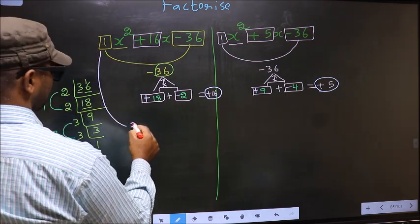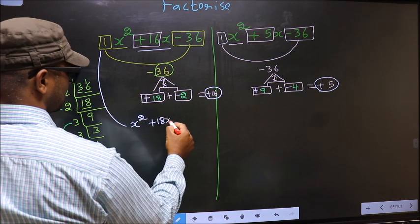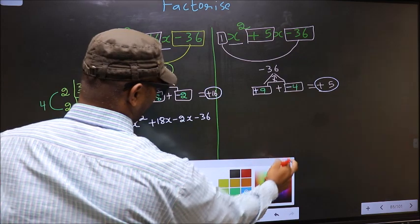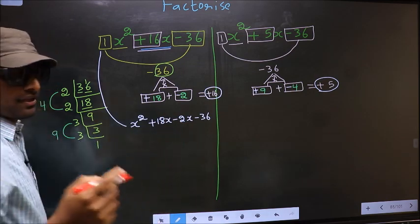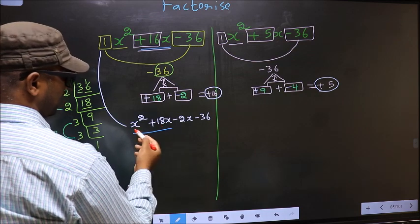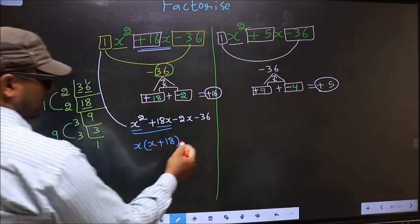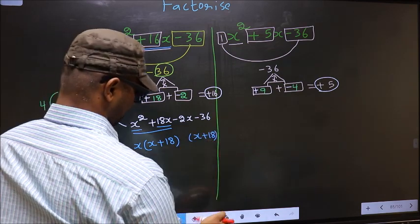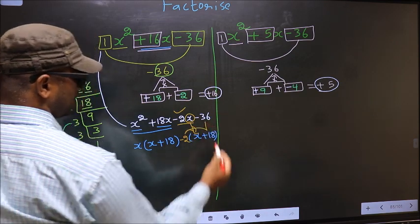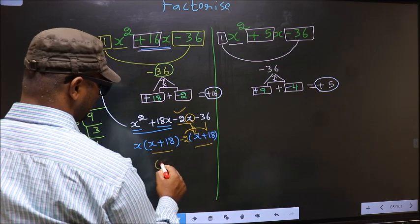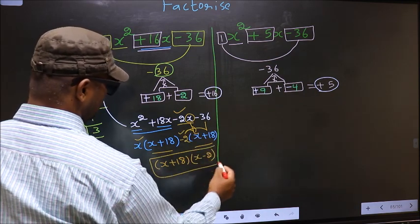Now, for x² + 16x - 36: in place of +16x we write +18x - 2x, giving x² + 18x - 2x - 36. From the first two terms, take out x common: x(x + 18). From the last two terms, take out -2 common: -2(x + 18). Now take out (x + 18) common, giving (x + 18)(x - 2). This is the answer for this one.